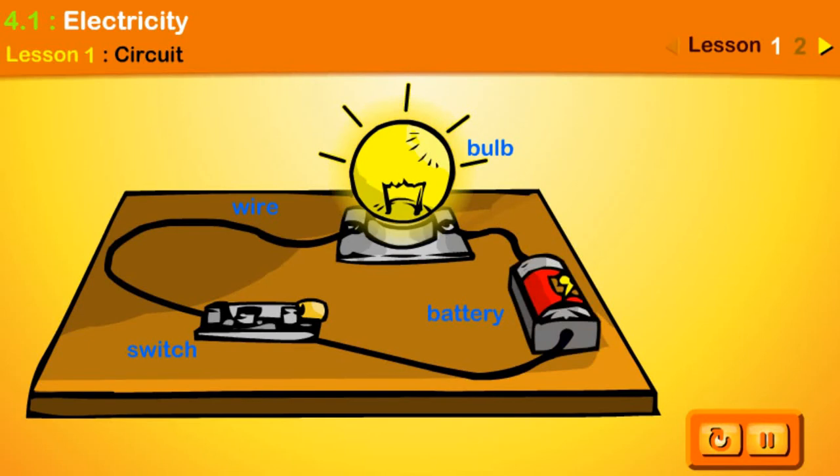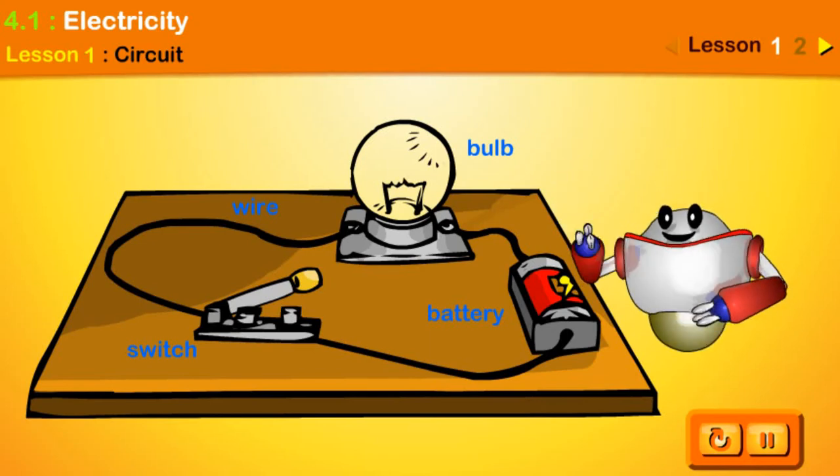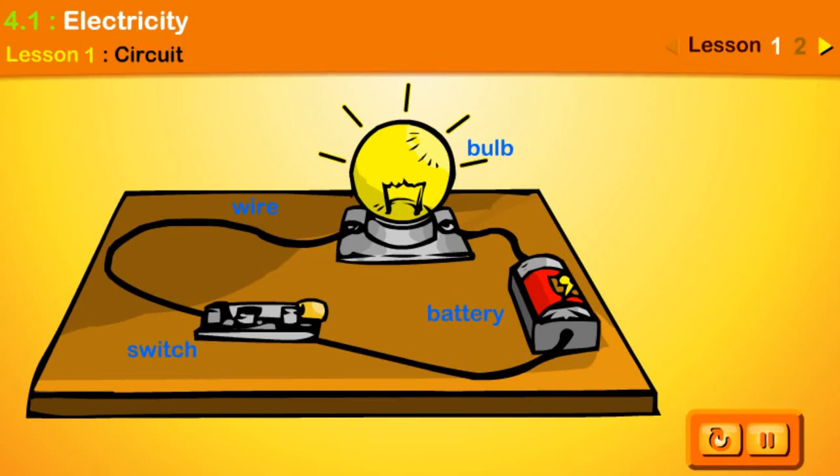Let's take out one battery from the circuit. What will happen? The bulb glows dimmer. Do you know what the switch is for? The switch turns the bulb on and turns the bulb off.